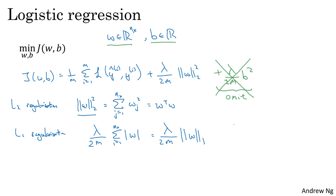If you use L1 regularization, then w will end up being sparse, and what that means is that the w vector will have a lot of zeros in it. Some people say that this can help with compressing the model, because if some parameters are zero then you need less memory to store the model. Although I find that in practice L1 regularization to make your model sparse helps only a little bit, so I don't think it's used that much, at least not for the purpose of compressing your model. When people train neural networks, L2 regularization is just used much, much more often.